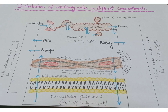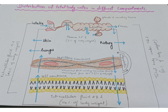Transcellular fluid is the fluid present in the secretions of secretory cells and cavities of the body, including saliva, sweat, cerebrospinal fluid, intraocular fluid, pericardial fluid, pleural fluid, peritoneal fluid, and lacrimal fluid. This fluid volume is relatively small — about 1.5 percent of body weight, around 1 liter in a person of 70 kg.